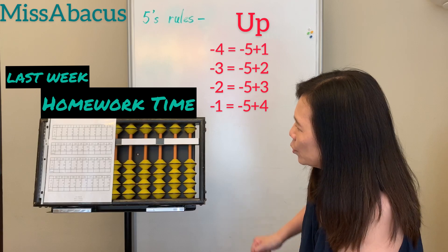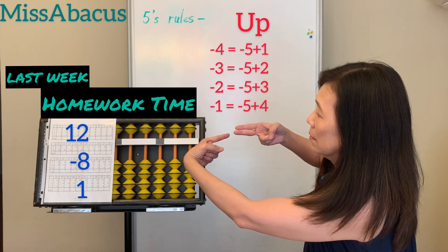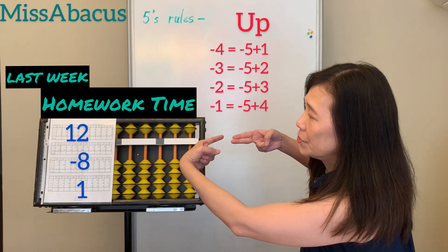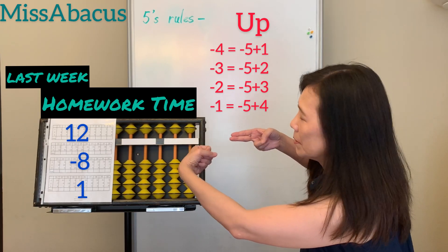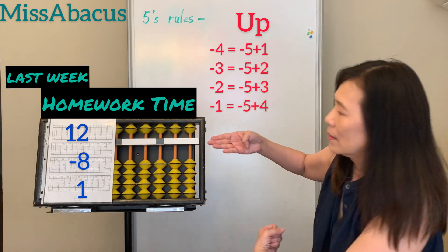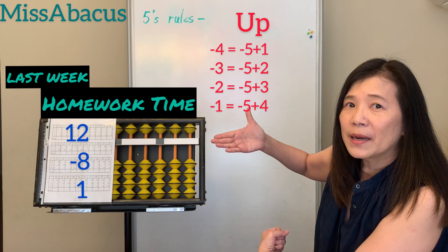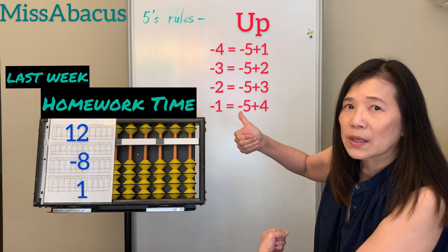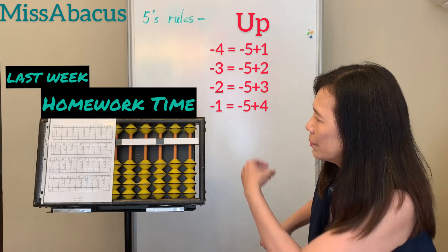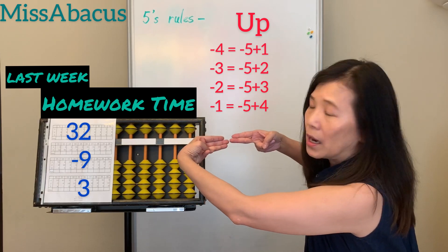Number 37: 12 — one, two, that's 12 — minus 8. Two not enough for 8 — of course 10's rule: minus 10, plus 2. Then plus 1: you have 5, so 5 minus 4 — that's 1. Answer: 5.